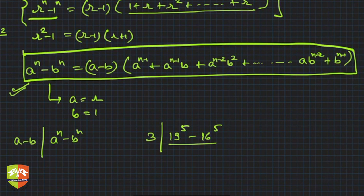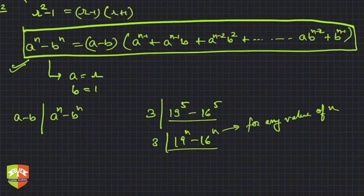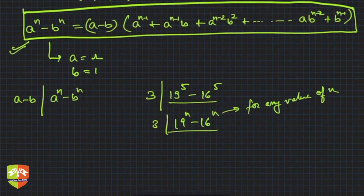3 divides 19^n - 16^n whatever be the value of n, for any natural number value of n. Interesting, right? So you must catch those insights.